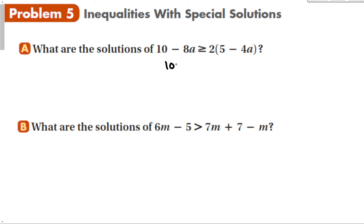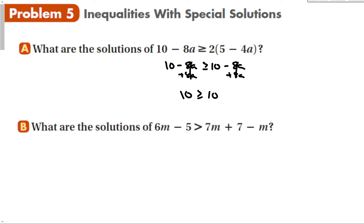We have 10 minus 8a is greater than or equal to 10 minus 8a. When I add 8a to both sides, they cancel out, and it says 10 is greater than or equal to 10. Well, 10 equals 10, so this is true — the solution is all real numbers.